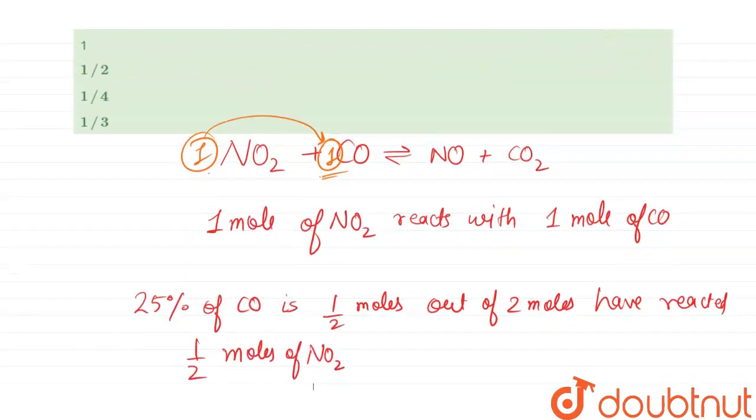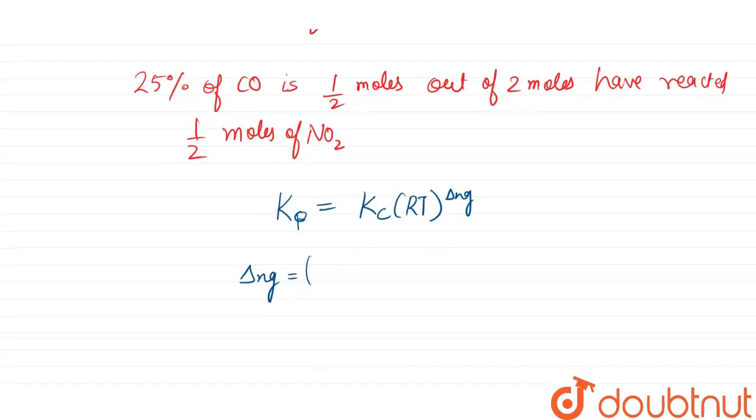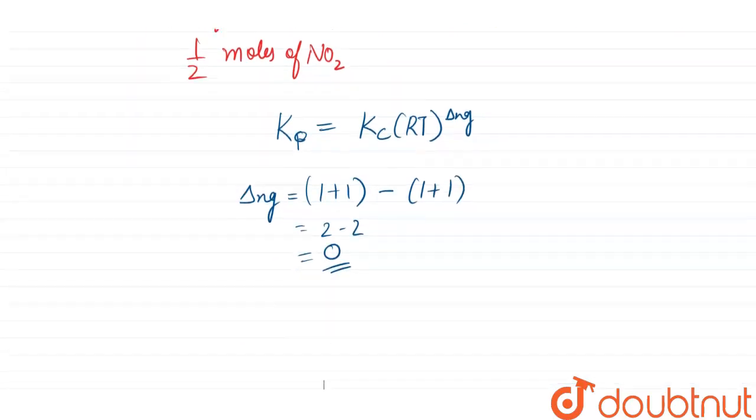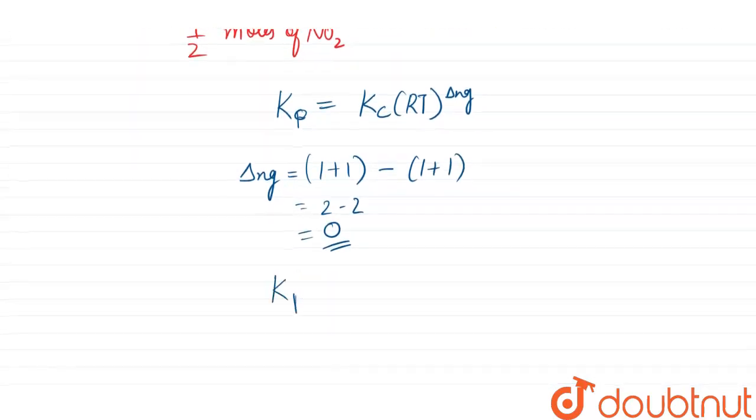So it will be 2 minus 2, which is zero. Anything raised to power zero is one, so Kp equals Kc. So if we find Kc, that will be equal to Kp.